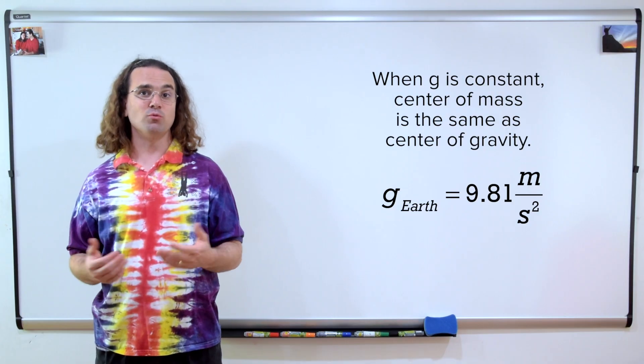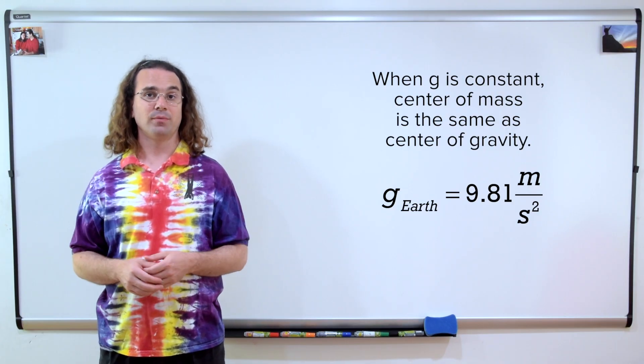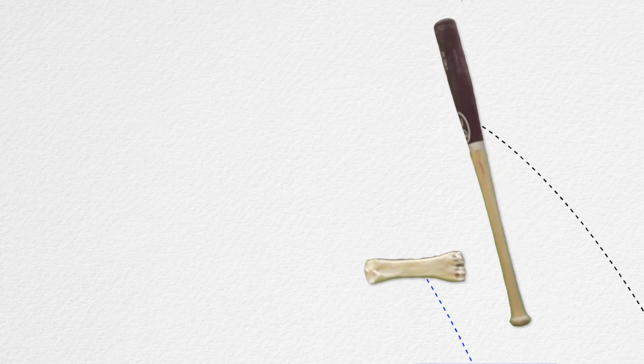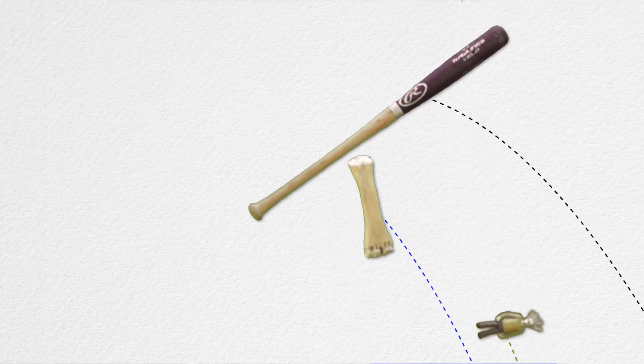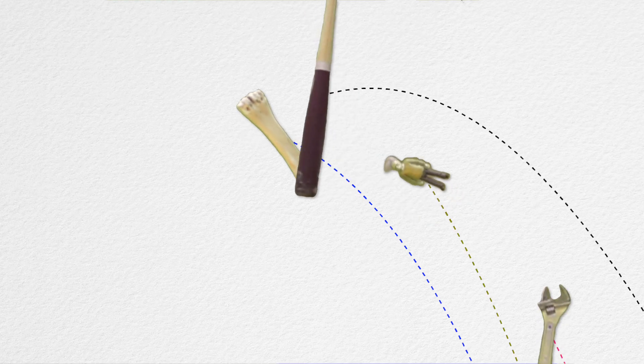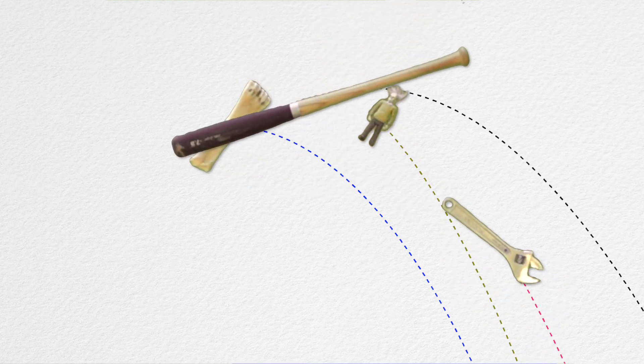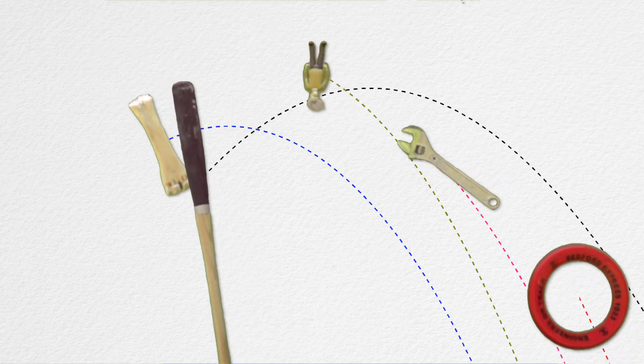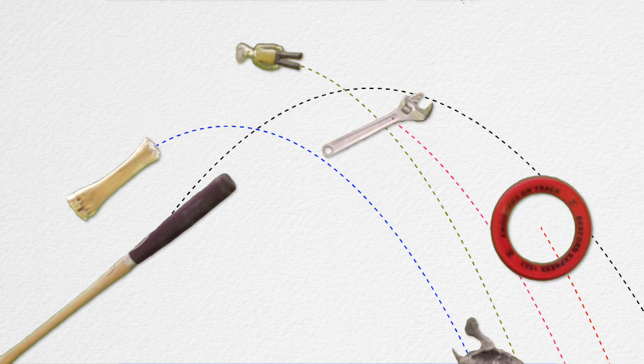Okay, let's add some more objects moving in projectile motion: a baseball bat, a bone, an Einstein action figure, an adjustable wrench, a hoop frisbee, a turtle.